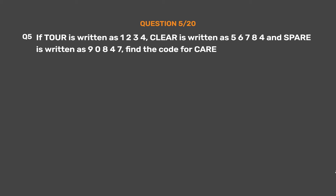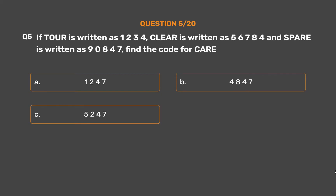Question number 5: If 'tour' is written as 1234, 'clear' is written as 56784, and 'spare' is written as 90847, find the code for 'care'. Option A: 1247. Option B: 4847. Option C: 5247. Option D: 5847.